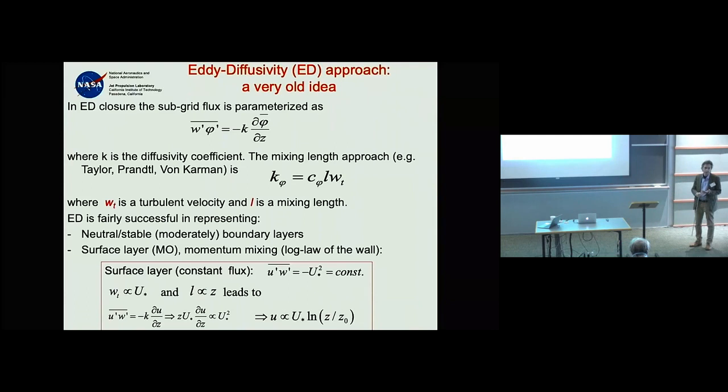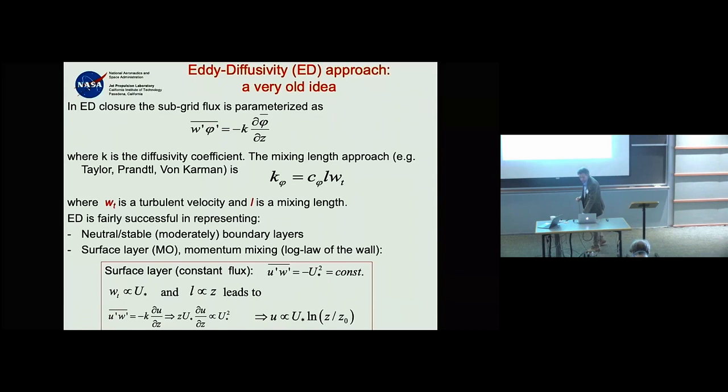But eddy diffusivity really doesn't do well in convective boundary layers. For convective boundary layers, people began using mass flux or plume approaches — mostly for moist deep convection initially.